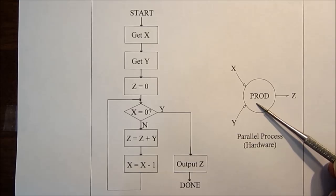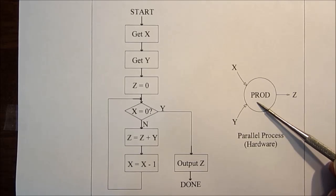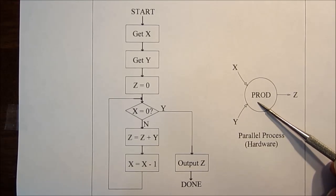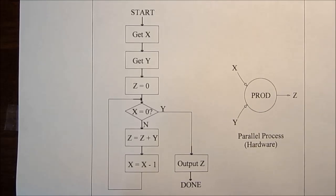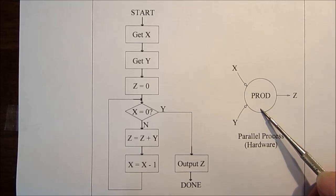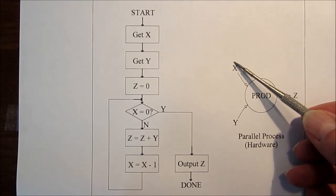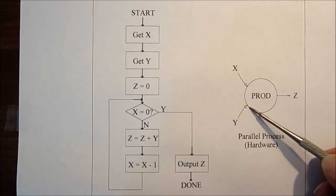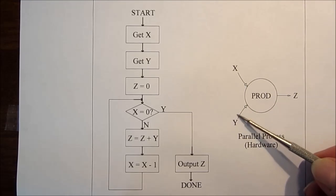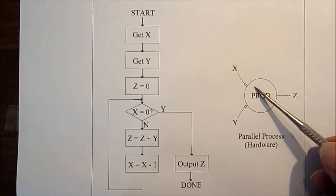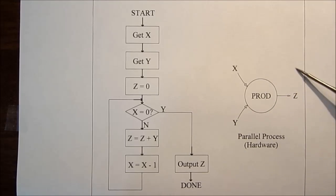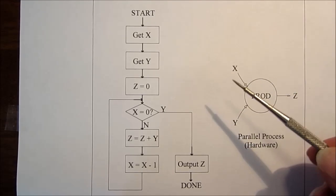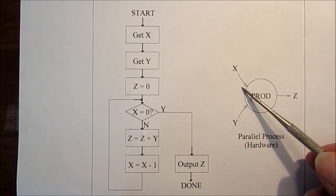Now over here we have quite a different way of doing business, and that is a parallel process. What's inside this bubble can be quite complex. It's a black box, if you will. What's happening here is we're taking these two variables and impinging them on whatever this circuit is simultaneously, and almost at the same instant we're getting an answer. So this is more like an organic system, or a neural network system, where everything happens at once.